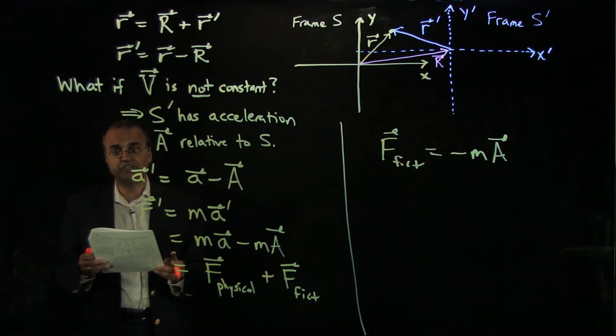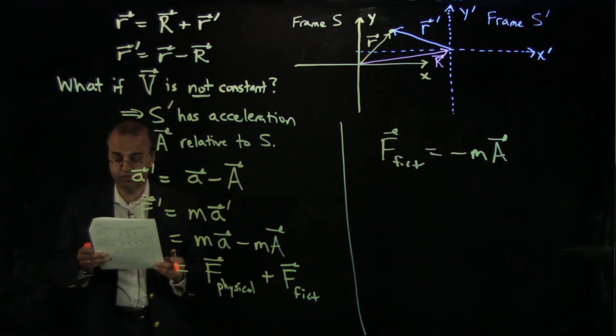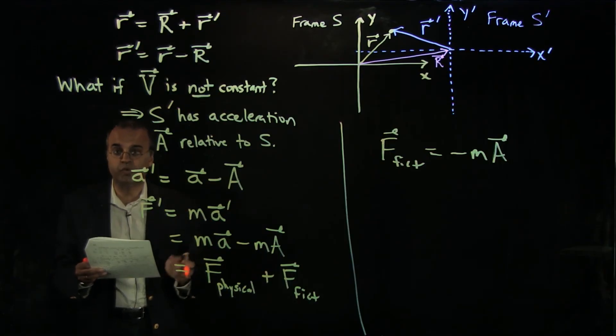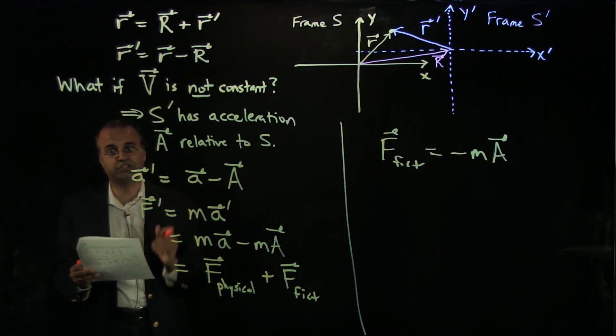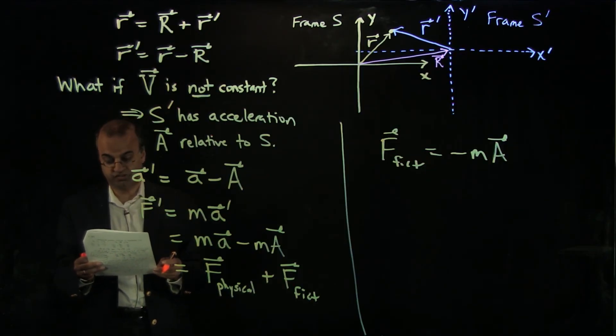This results in a fictitious force that has two terms, a centrifugal term and a Coriolis term. You may have come across a Coriolis force and a centrifugal force before. These are examples of fictitious forces because they arise from the choice of coordinate system. They're an artificial force. They don't correspond to actual physical interactions, but are an artifact of the rotating non-inertial coordinate system.